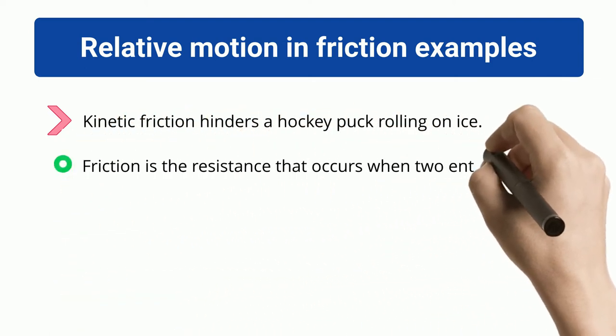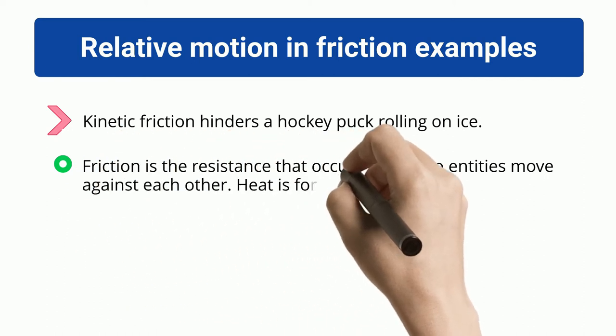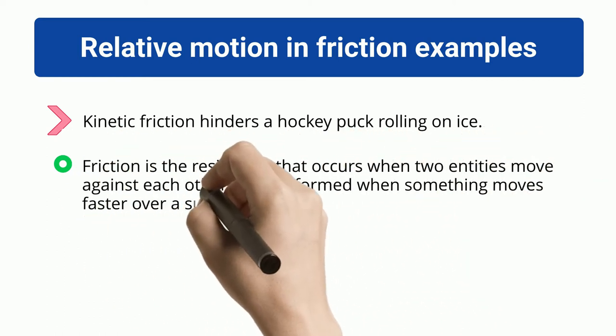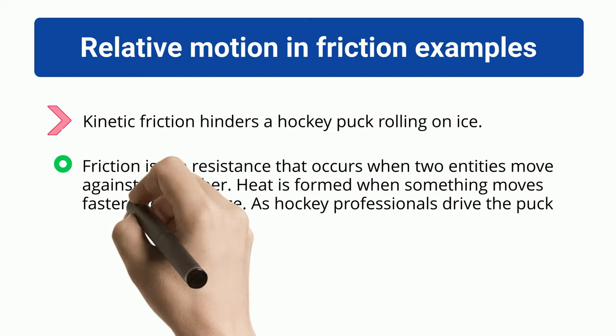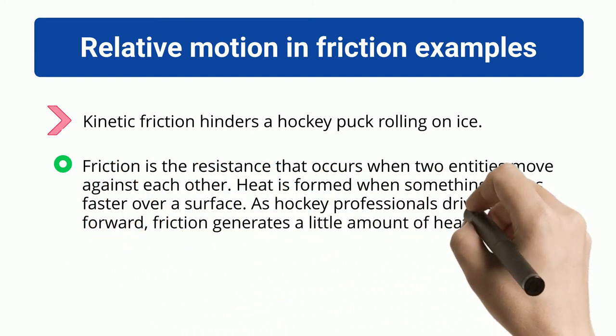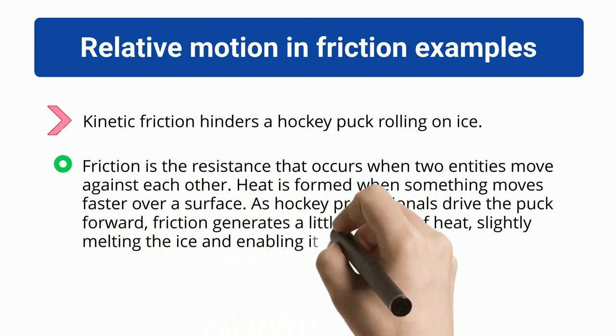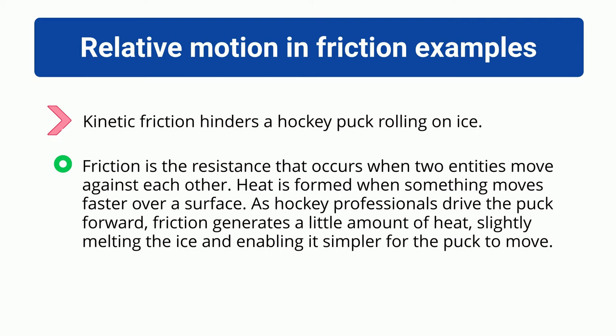Friction is the resistance that occurs when two entities move against each other. Heat is formed when something moves faster over a surface. As hockey professionals drive the puck forward, friction generates a little amount of heat, slightly melting the ice and enabling it simpler for the puck to move.